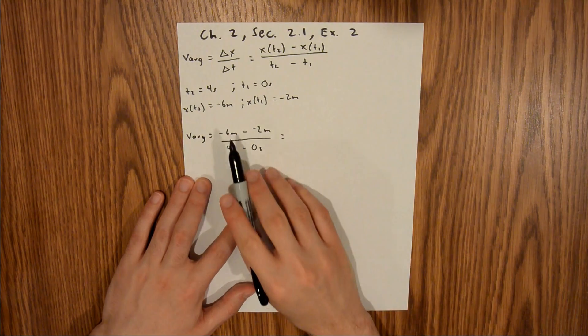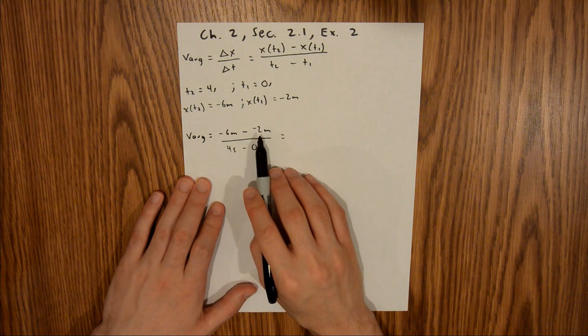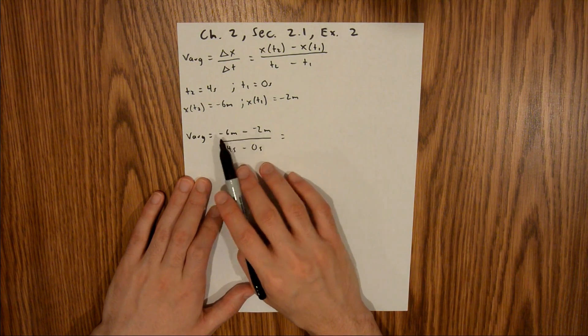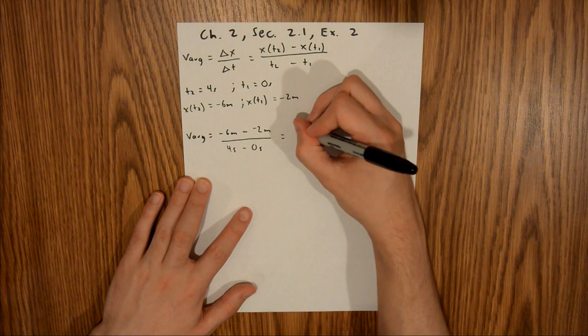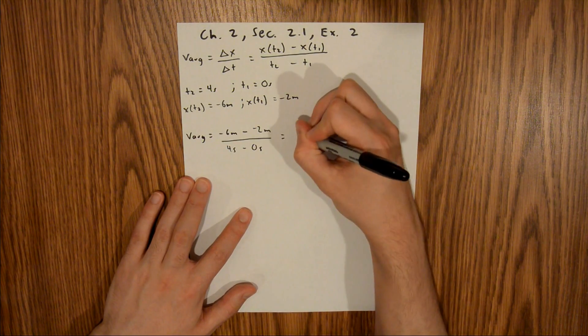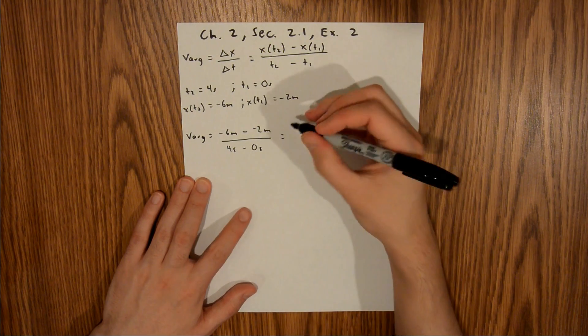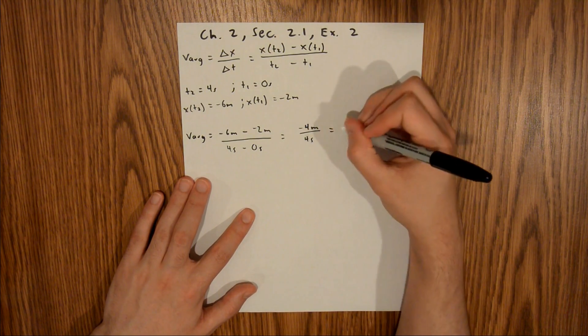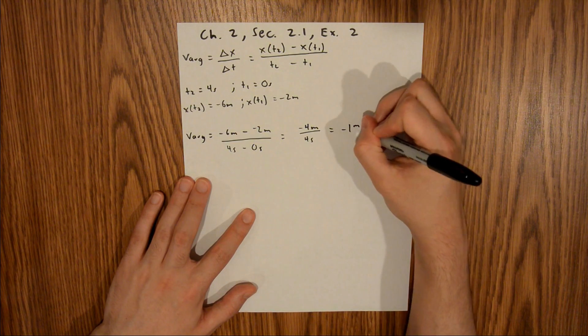In the numerator, we have negative 6 minus negative 2. A double negative is a plus, so negative 6 plus 2 equals negative 4 meters, divided by 4 seconds minus 0 seconds, which is 4 seconds. That equals negative 1 meters per second.